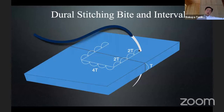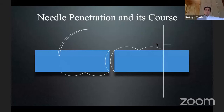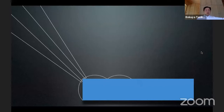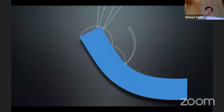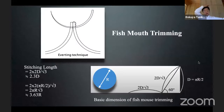The dura must be penetrated completely through the whole layer. The bite should be two times the wall thickness, so totally the distance from one penetration point to another should be four times the wall thickness. When we stitch the dura, you can hold the dura with forceps and then penetrate it — this is a very important principle to achieve complete penetration of the whole dural layer.